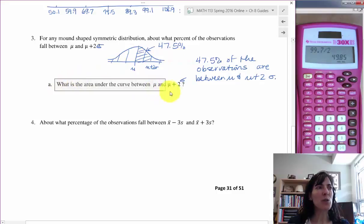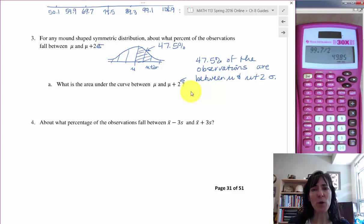And then we're being asked, what's the area under the curve in that region? Well, the area under the curve is the same as the amount of the probability, or here we have what percent of the observations. We can convert that into a decimal. So we're talking about three different things and they all come out to pretty much the same number.